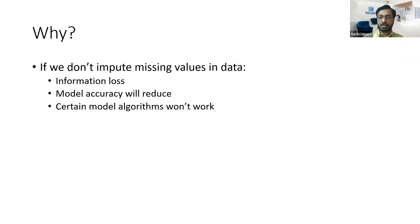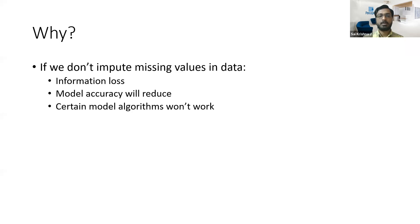Typically, if you have done any linear regression, you might have observed that as and when you add additional variables to your model, the accuracy will keep on improving — the R-squared value will keep improving. So when you remove those variables without imputing them, the model accuracy will reduce.